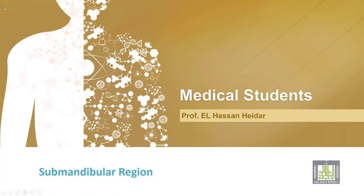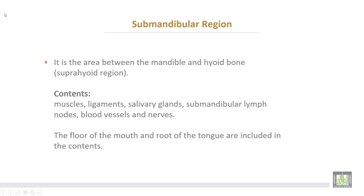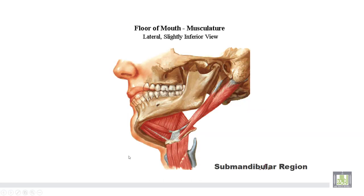The submandibular region is the area between the mandible and the hyoid bone. Sometimes it is called the suprahyoid region. The contents of the submandibular region include muscles, ligaments, salivary glands, submandibular lymph nodes, blood vessels and nerves. The floor of the mouth and root of the tongue are also included in the contents of the submandibular region.